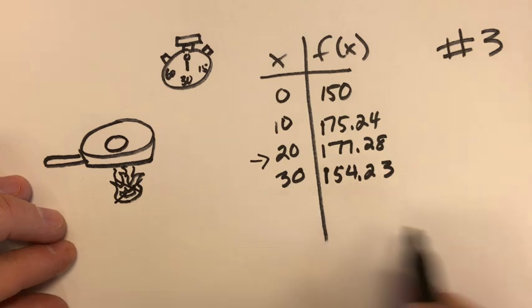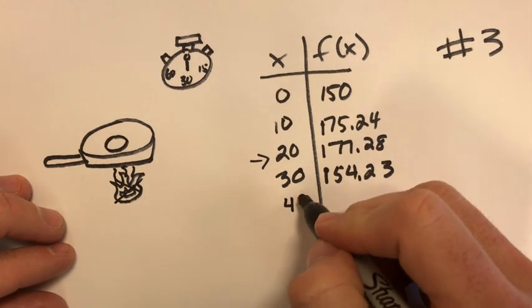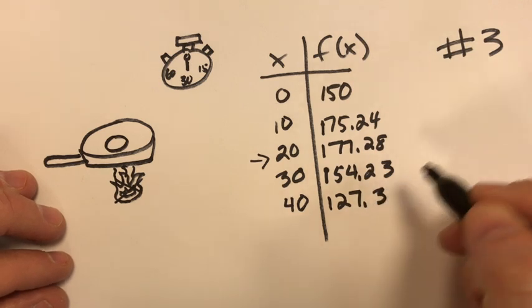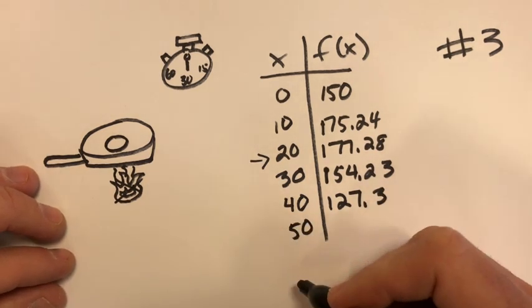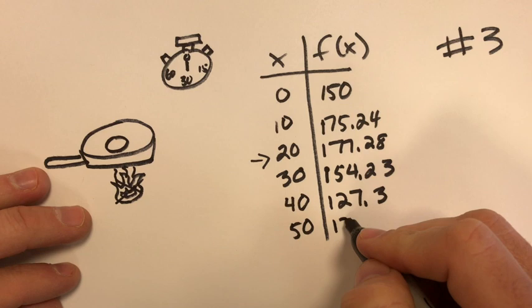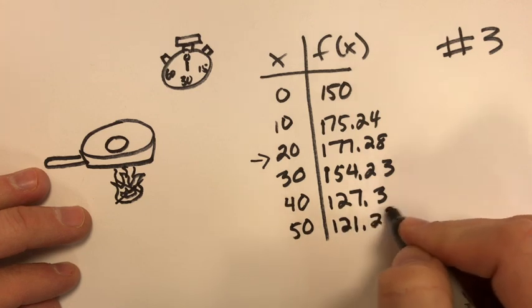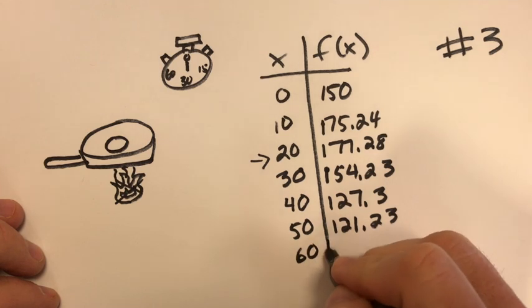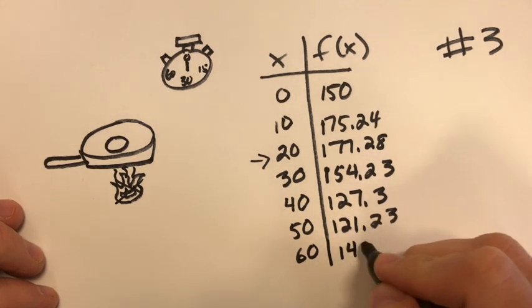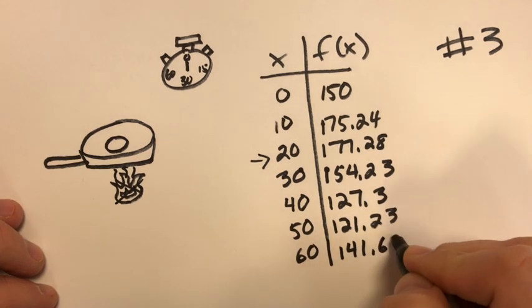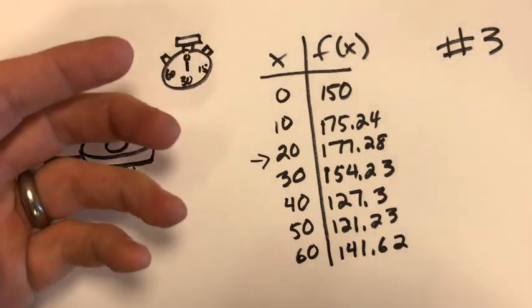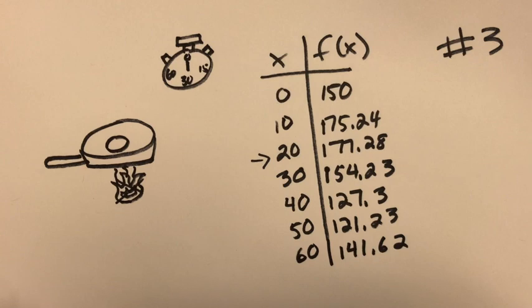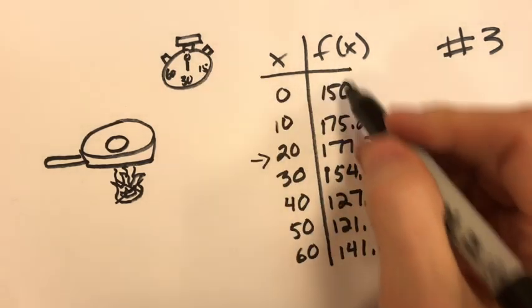Now it's decreasing. After 40 seconds still going down, apparently it's still off. After 50 seconds it's apparently still off, 121.23, but then apparently right around 50 seconds you turn it back on. And after 60 seconds now it's back up to 141.62. So again it's this turning on and off and that's how the temperature changes over this number of seconds. So x is the time and f(x) is the temperature of the skillet.